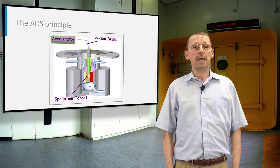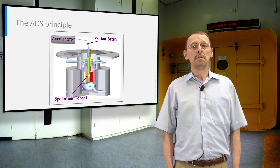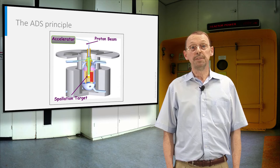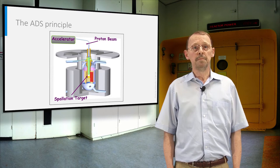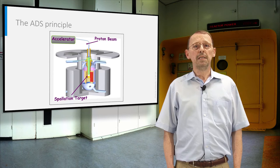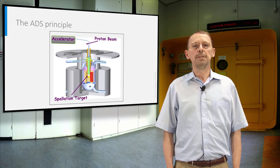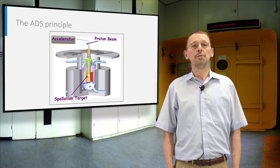In an ADS, Kf is slightly lower than 1, typically 0.95 to 0.97. This means that if we do not have the accelerator, the fission chain reaction will stop.